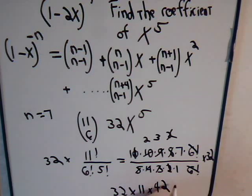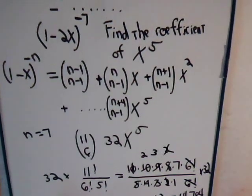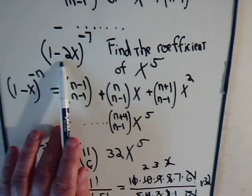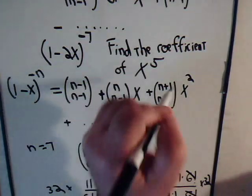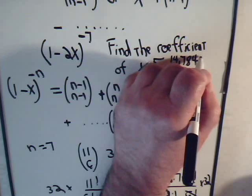And if you put that on the calculator, I think it comes out to this. So the coefficient for x to the fifth for this expansion here would be 14,784.